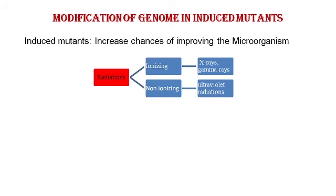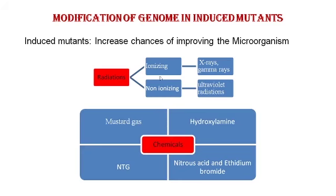For obtaining induced mutants, we take the help of mutagens. Mutagens are classified as physical mutagens and chemical mutagens. Among physical mutagens, we have ionizing radiations and non-ionizing radiations, where non-ionizing radiations have played a major role in strain improvement. Among chemical mutagens, we have studied their biochemical mechanisms to induce mutations in microorganisms.